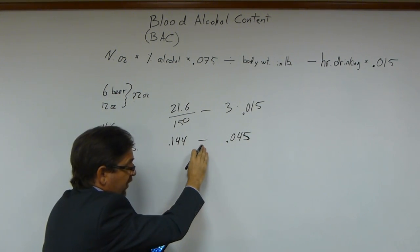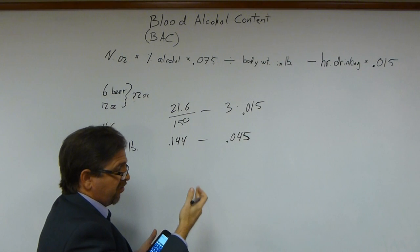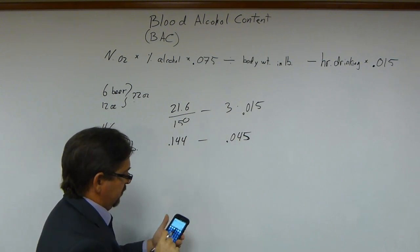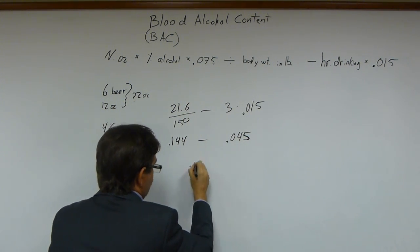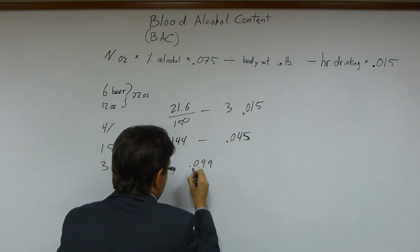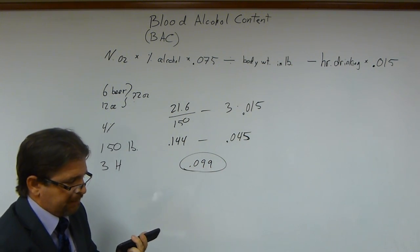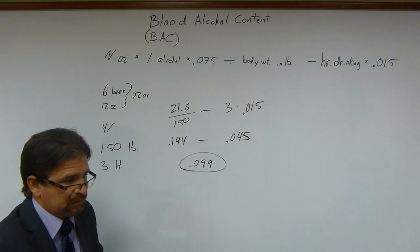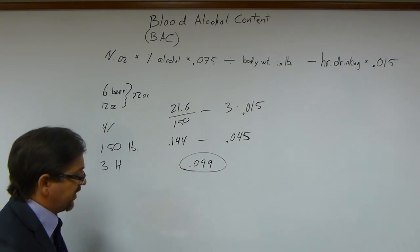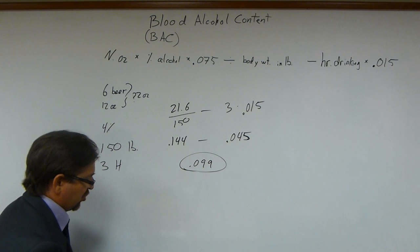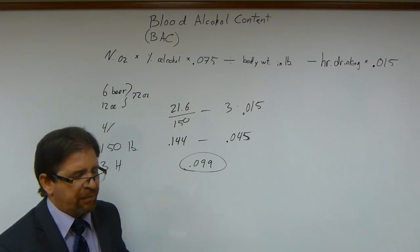Now we subtract those two: 0.144 minus 0.045 gives us 0.099. That is a big number for blood alcohol content. But that's how you do the calculation — a bit at a time, following order of operations.